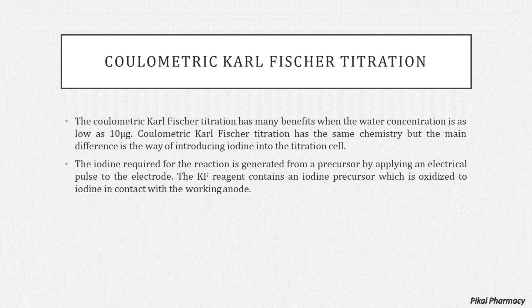Coulometric Karl Fischer titration has the same chemistry, but the main difference is the way iodine is introduced into the titration cell. The iodine required for the reaction is generated from a precursor by applying an electrical pulse to the electrode. The Karl Fischer reagent contains an iodine precursor which is oxidized to iodine in contact with the working anode inside the titration cell.